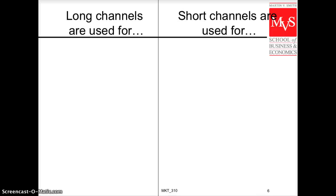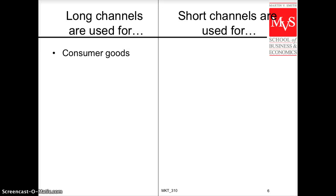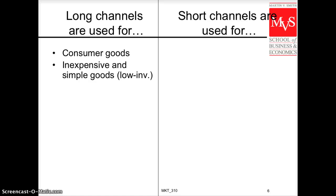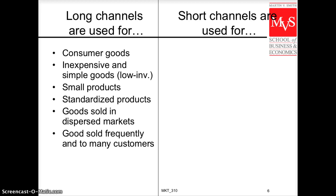What type of products work well in long channels? Long channels with many intermediate steps are good for consumer goods — inexpensive, simple goods. Going back to consumer behavior, those low-involvement products are usually distributed through many steps. Small, standardized products sold frequently to many customers — think of sodas. Think of Coke: how often do we buy Coke directly from the manufacturer? Coke fits perfectly in the description of products suited for long channels.